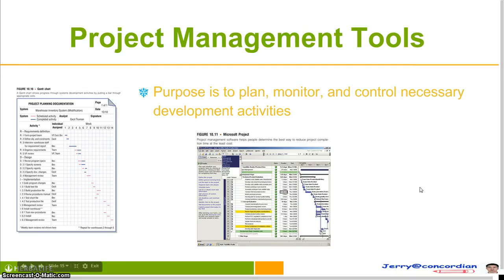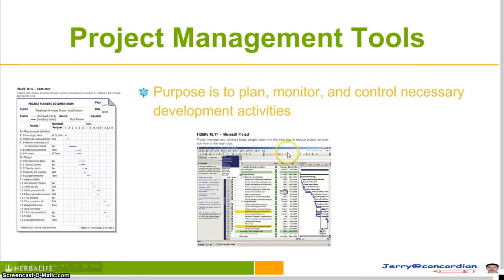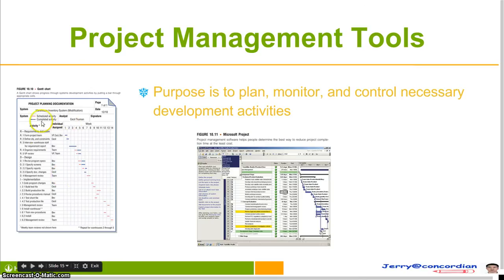Project management tools are used to plan, monitor, and control necessary development activities. One tool is PERT — Program Evaluation and Review Technique — which creates three time estimates for an activity: the shortest possible time, the most likely time, and the longest possible time. Another tool is the Gantt chart, which is a grid that lists activities and their date lengths.